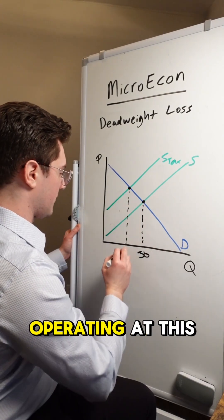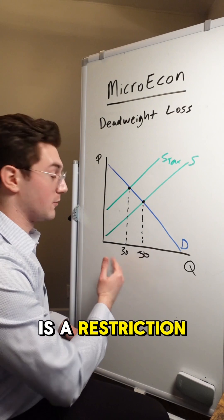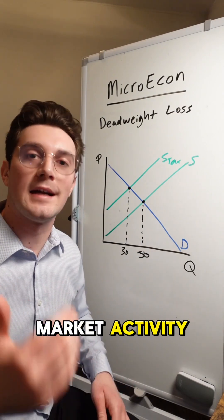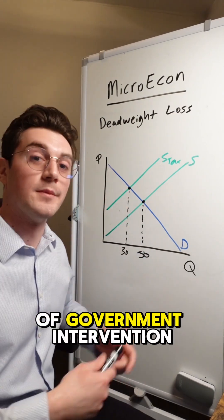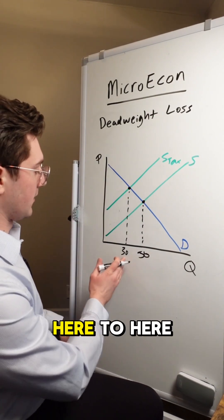But now with the tax, we're operating at this quantity, let's say 30 units. This right here is a restriction or reduction in market activity as a result of government intervention. The tax is increasing the price from here to here and moving the quantity back from here to here.